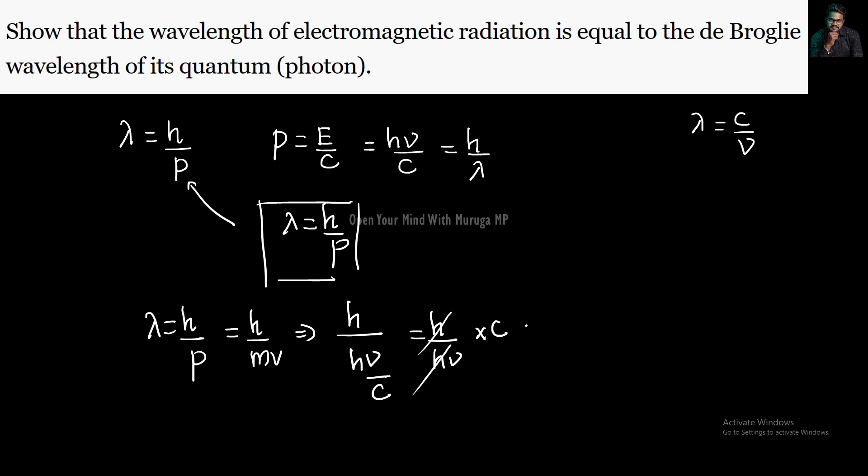So H and H cancel, then C by nu, so that is nothing but lambda. So either one, the lambda, the photon wavelength, which is equal to lambda not, the de Broglie.